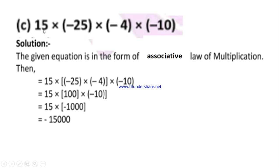Now see question C: 15 × (-25) × (-4) × (-10). So we are going to multiply all the numbers in one single operation. Here we are going to use associative property.